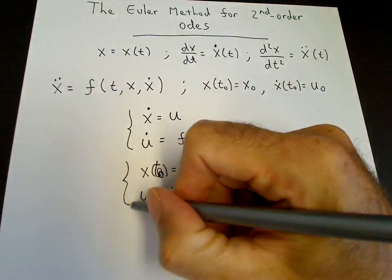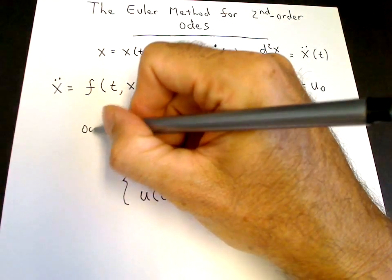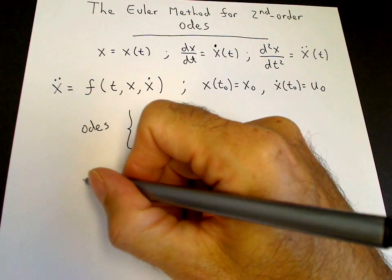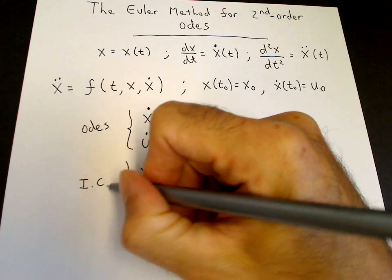u of t naught is equal to u naught. And these are our initial conditions. These are our ODEs and these are the initial conditions.